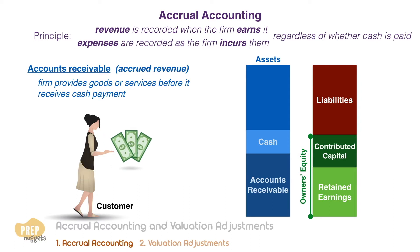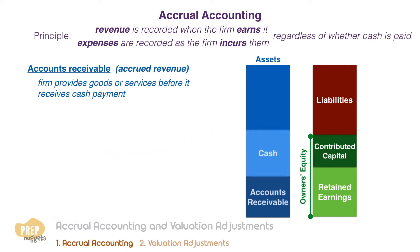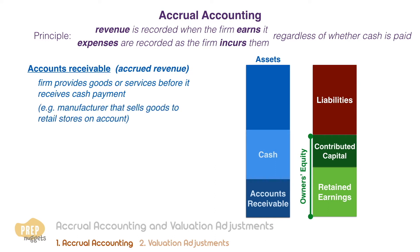When the cash payment is received, accounts receivable decreases and cash increases. A typical example would be a manufacturer that sells goods to retail stores on account. The manufacturer records revenue when it delivers the goods, but does not receive cash until after the retailers sell the goods to customers.